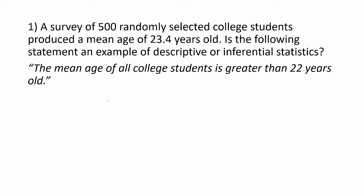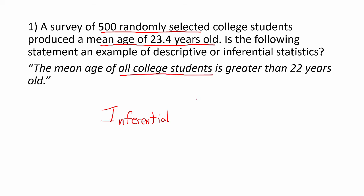This is an example of a statement that is inferential. The reason for that is the information that we have — that the mean age is 23.4 years old — applies to these 500 randomly selected college students. However, the statement refers to all college students. Since we are getting beyond the 500 students in the survey, this is an inferential statement.